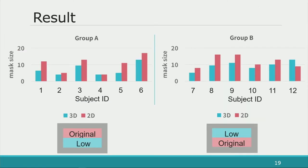This is the result of the experiment. This graph shows the mask number when the subject perceived no difference in the resolution. Compared with 2D, the subject answered that the resolution was the same even when the mask size was smaller, which means that the 3D image is perceived to have a higher resolution compared with the 2D image. This result supports our hypothesis.